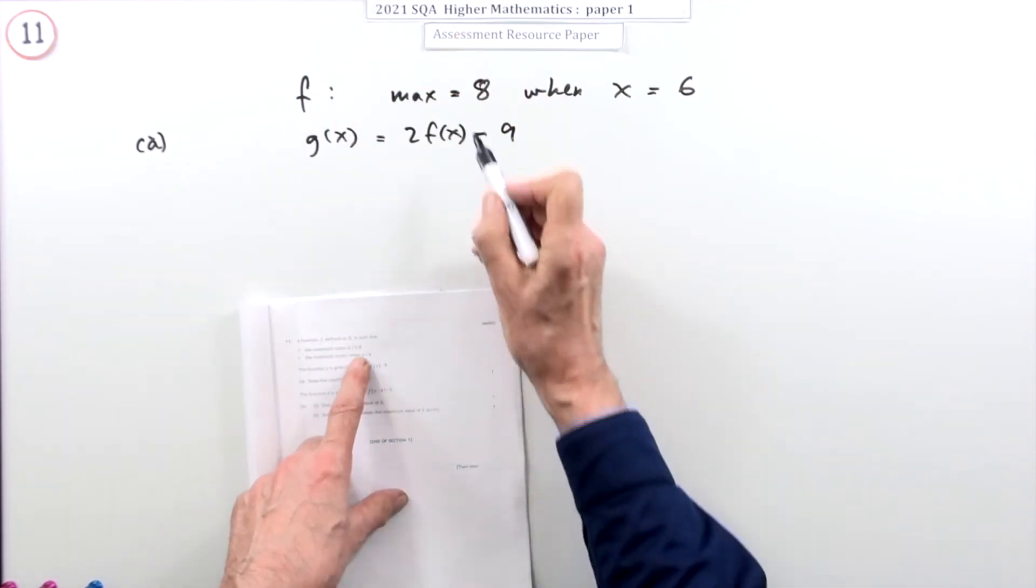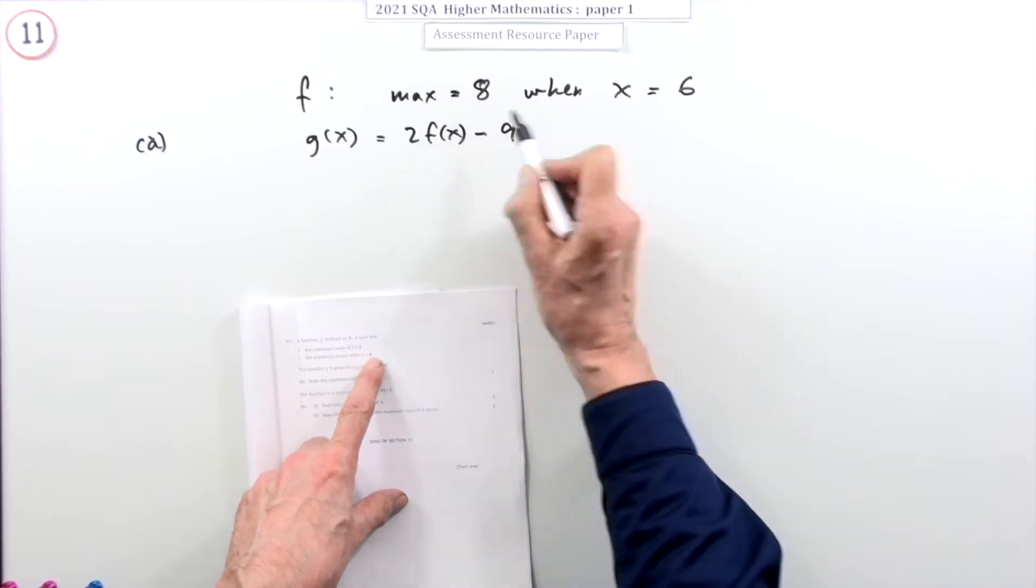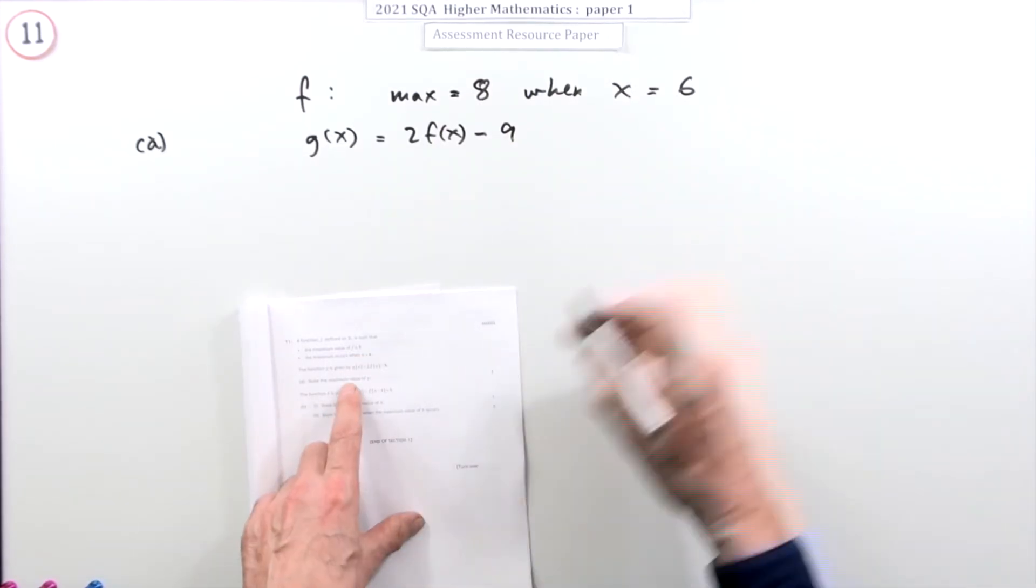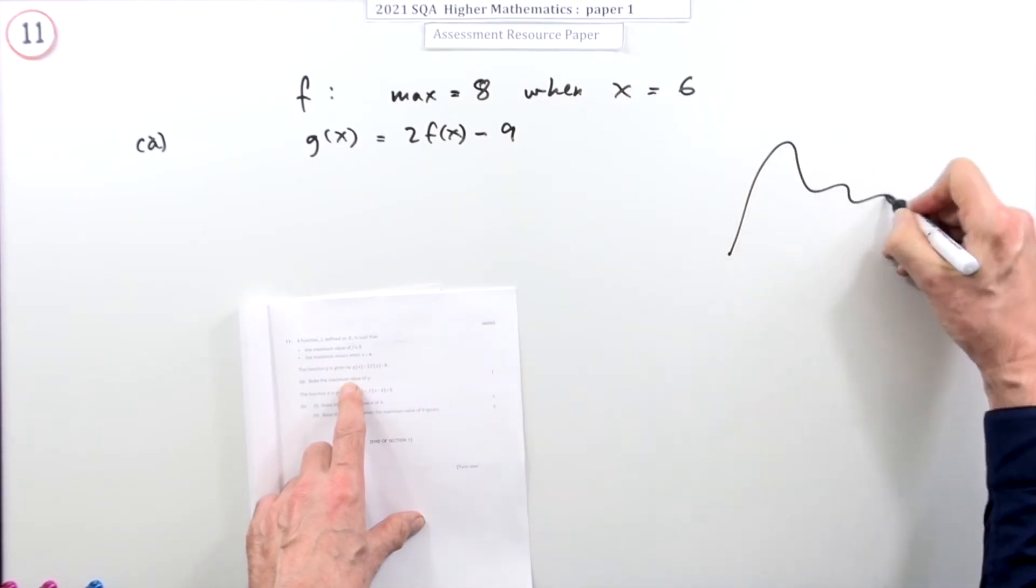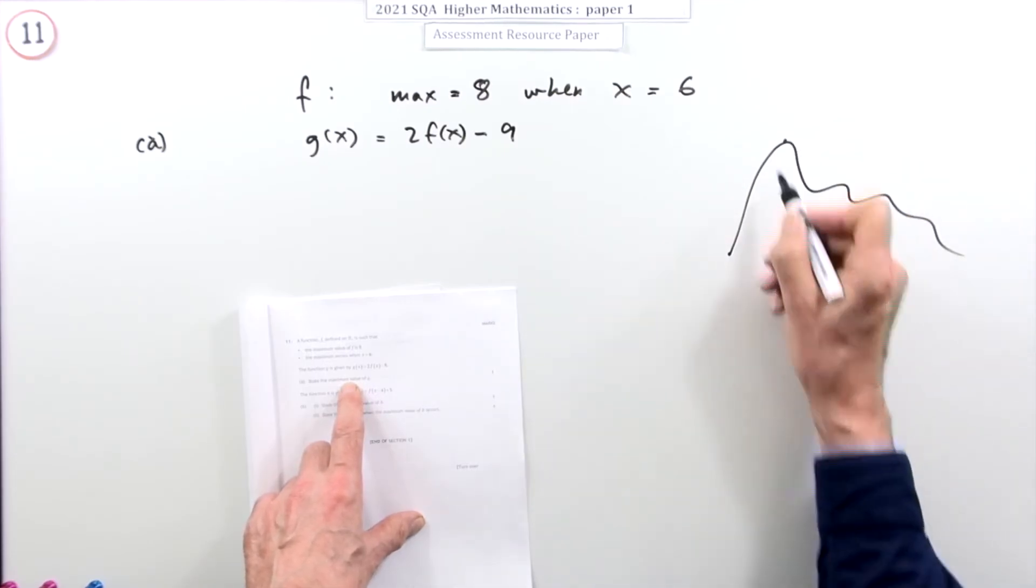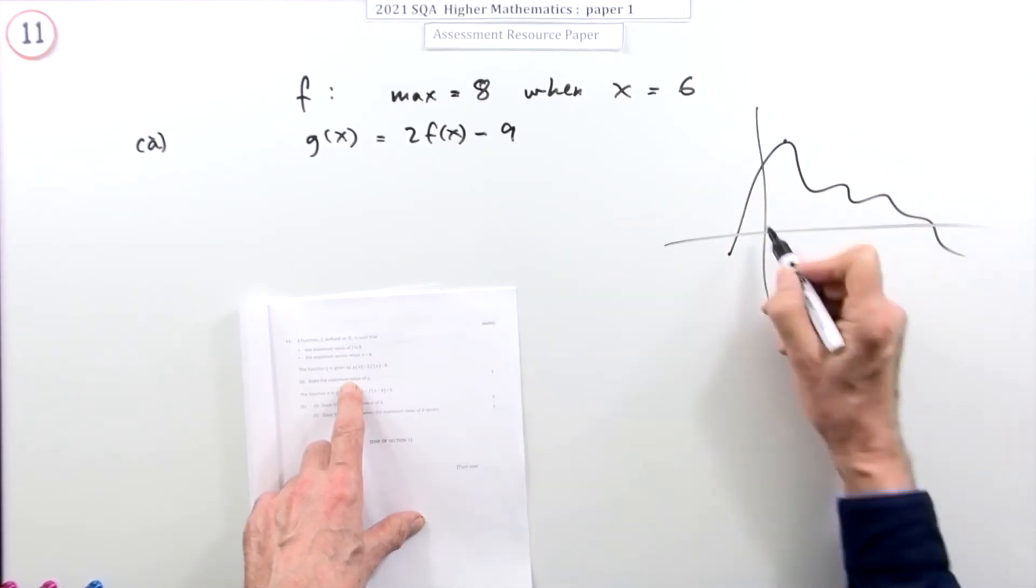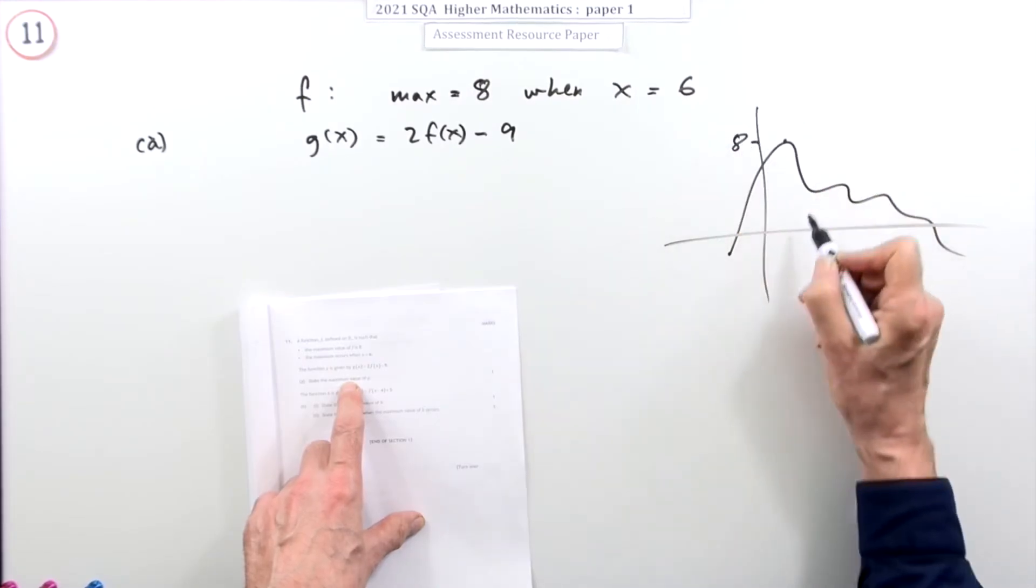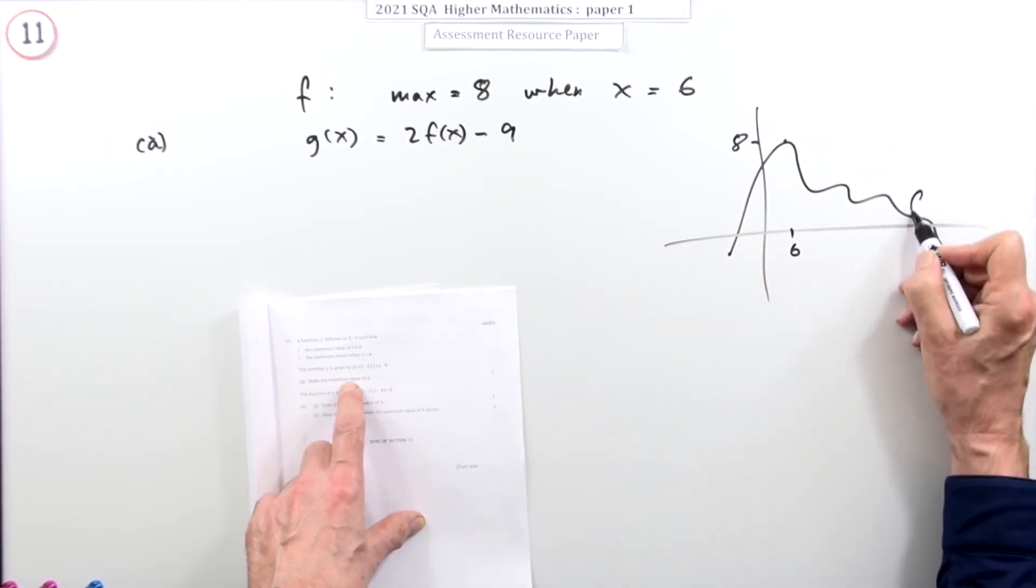You've got some function, you don't know what it is, but you do know that the highest it ever gets to is eight and that happens when x is six. If you were to think of a graph of it, it could look like that. That would be at eight when that was at six, and there's that function f.